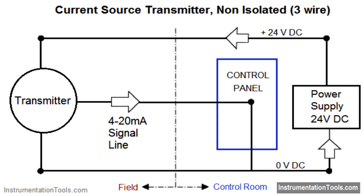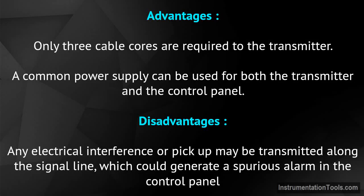Three-wire current source transmitter non-isolated. This is the most common configuration of modern 4 to 20 milliamps transmitters. The transmitter and control panel can use the same 24 volts and 0 volts DC supply lines. The 4 to 20 milliamp signal flows through the 24 volts DC line and the signal line to the controller. Advantages: only three cable cores are required to the transmitter.